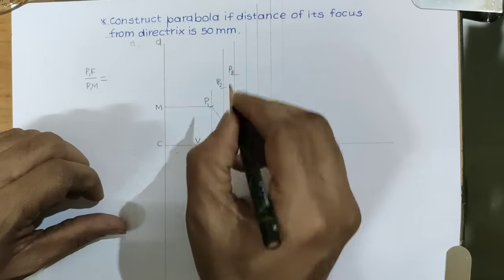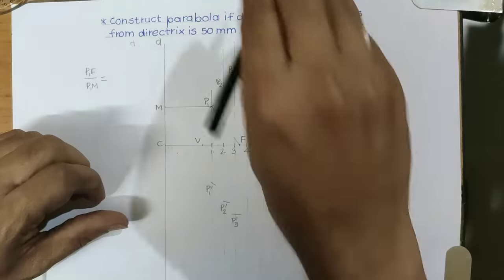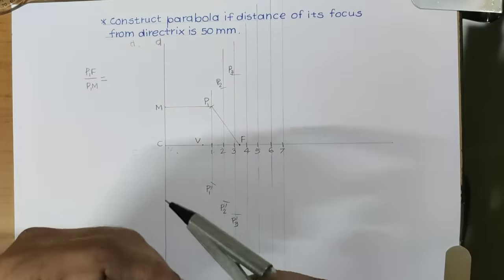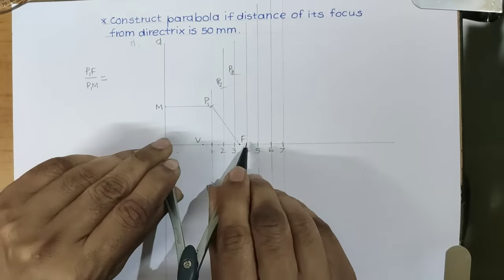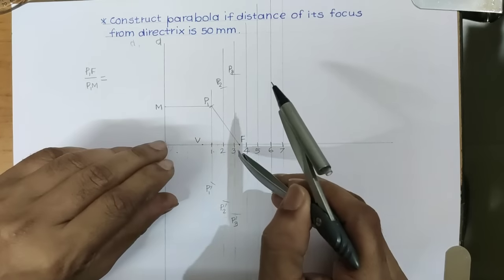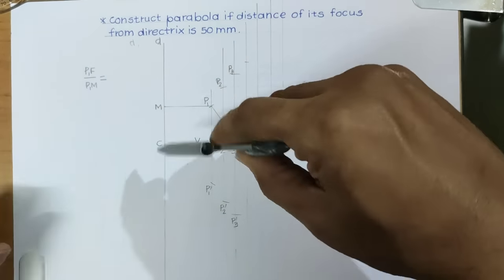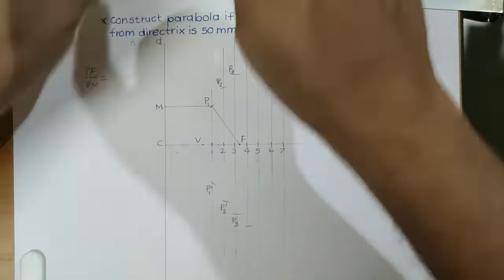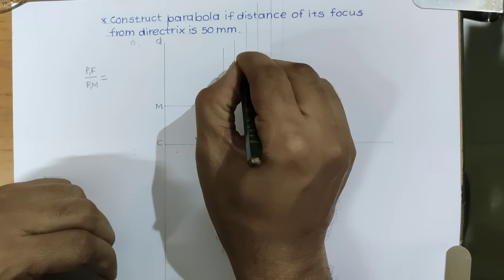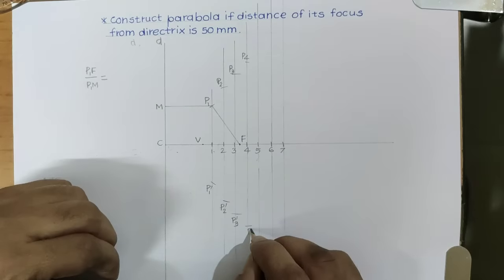P3, P3 dash. Then, C4 distance, taking F as center, cut fourth line on both sides. Then, it will give two more points, P4 and P4 dash.